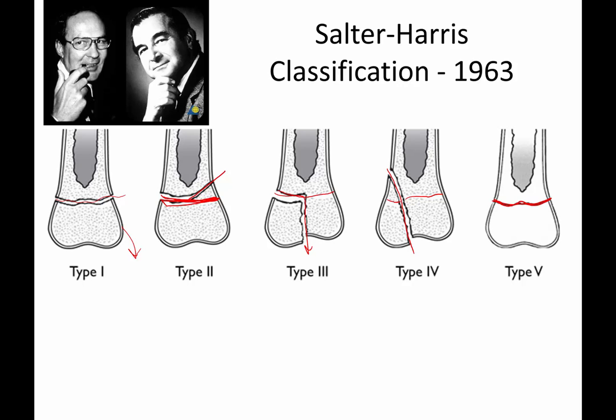When there's trauma to the growth plate, you can have a problem with the bone growing again. That can cause shortening of that bone, or asymmetric growth — where the bone stops growing on one side but keeps growing on the other, causing the bone to lengthen at an angle.